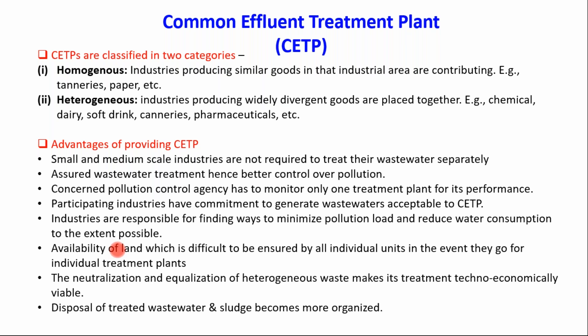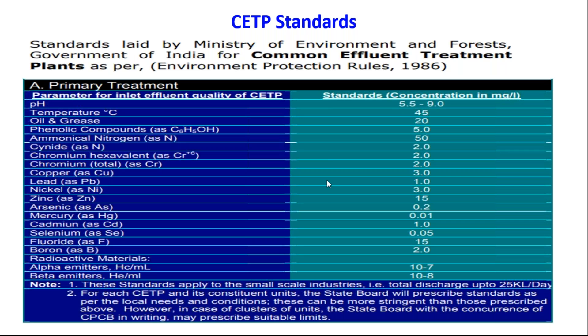Participating industries have a commitment to generate wastewaters acceptable to CETP. Maximum permissible limits in terms of PPM or mg/L are given by authorities like SPCB and CPCB, and industries are responsible for minimizing pollution load and reducing water consumption. Availability of land, which is difficult to ensure for all individual units, is easier to secure as a common facility. The neutralization and equalization of heterogeneous waste makes treatment techno-economically viable, and disposal of treated wastewater and sludge becomes more organized.